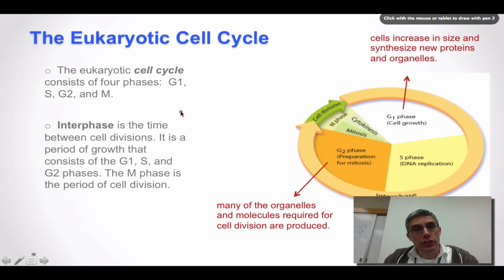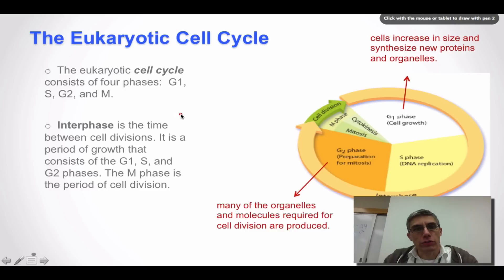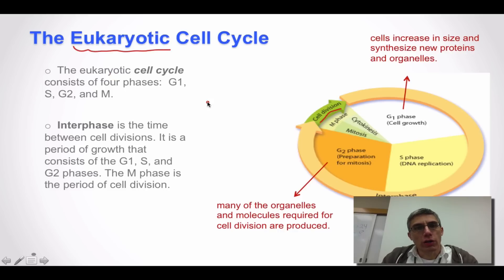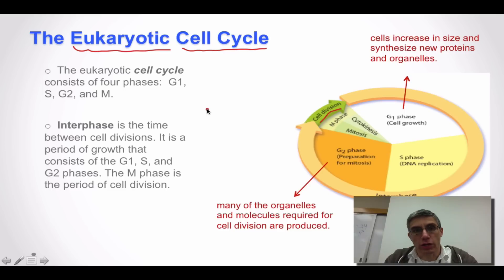Welcome back. This is our second screencast for section 10.2. In this screencast we are going to focus more closely at the process of cell division in eukaryotic cells. We had talked about the cell cycle last time in regards to both prokaryotic and eukaryotic cells, but we're going to focus primarily on eukaryotic cells for this video.